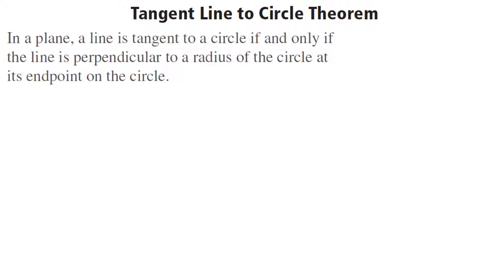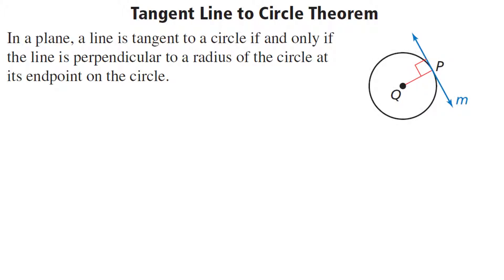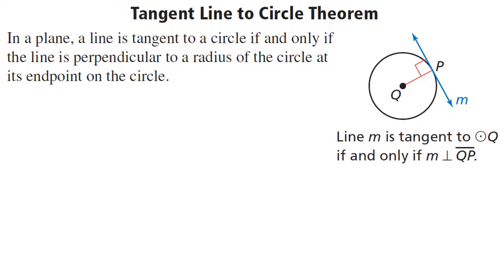If you've got a plane, a line is tangent to a circle if and only if the line is perpendicular to a radius of the circle at its endpoint on the circle. That's a mouthful — let's see if a picture clears that up. We've got a tangent line m. Notice it intersects the circle at point P. There's a radius that goes from Q to P — that's a line segment, it's a radius. The tangent line m is perpendicular to the radius QP, marked with a 90-degree angle. Line m is tangent to circle Q if and only if m is perpendicular to segment QP.